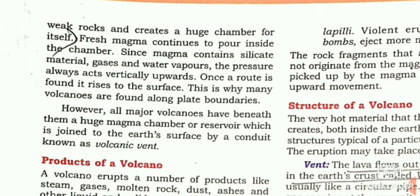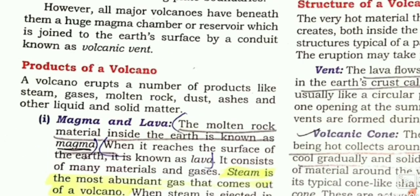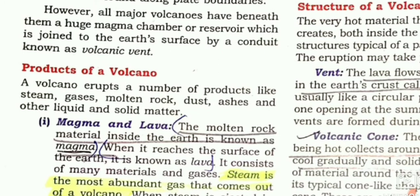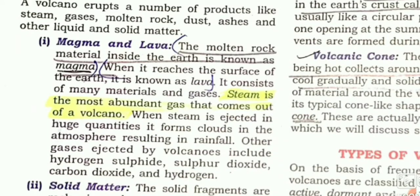Volcanic eruptions happen. Next are the products of volcanoes. When a volcanic eruption happens, a number of products come out, like steam, which is the most abundant gas that comes out of the volcano. Then certain gases like hydrogen, sulfur dioxide, carbon dioxide, molten rock, dust, ashes, and other liquid and solid matter.